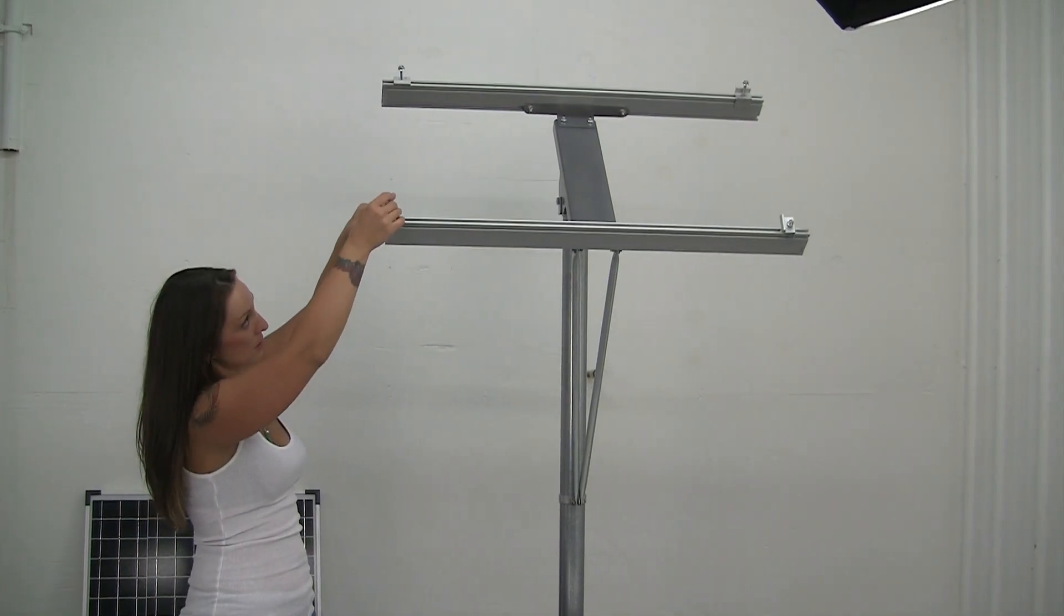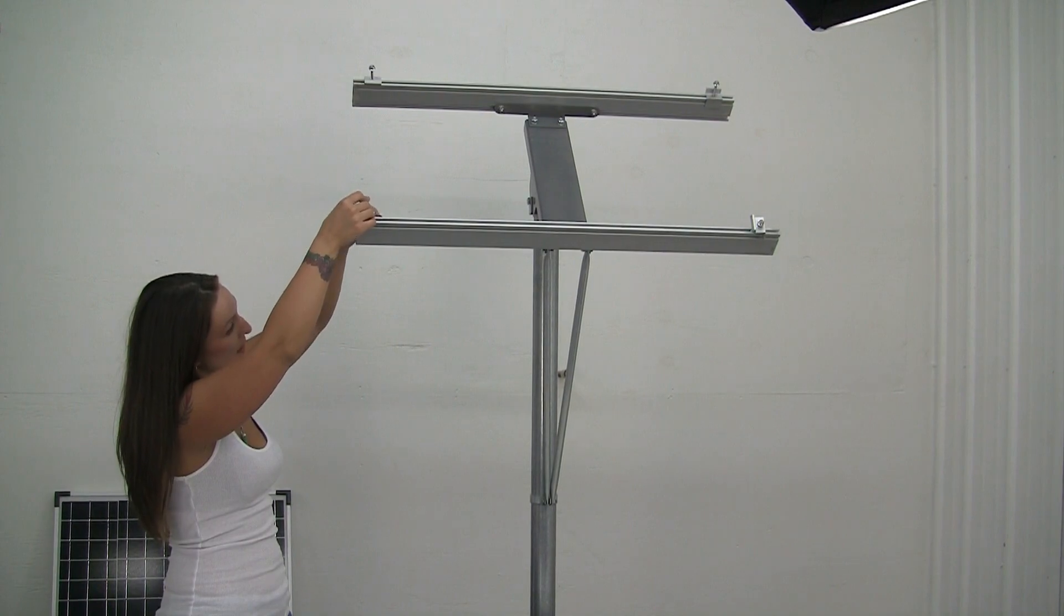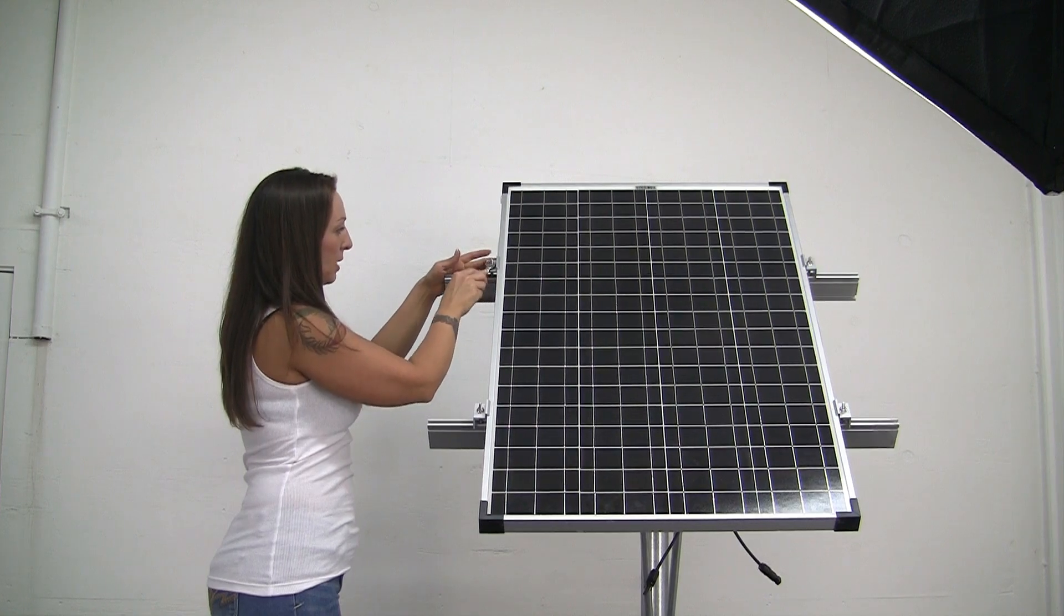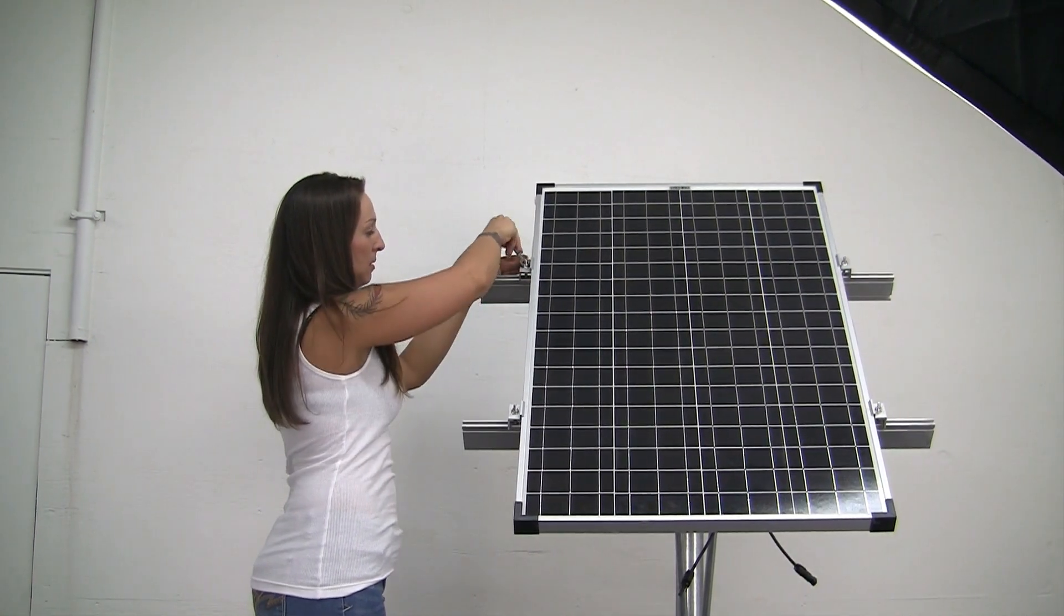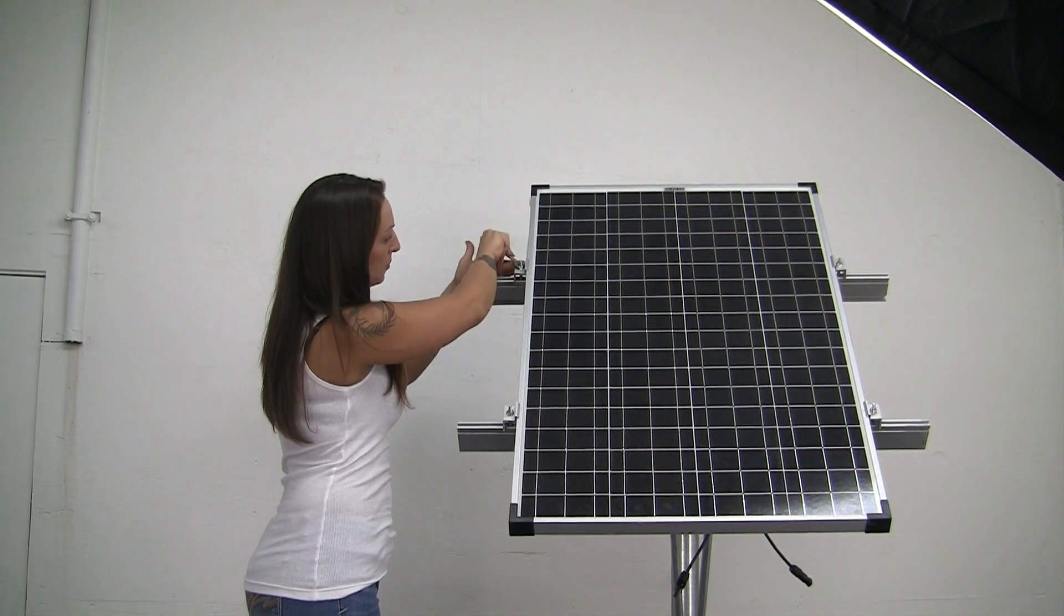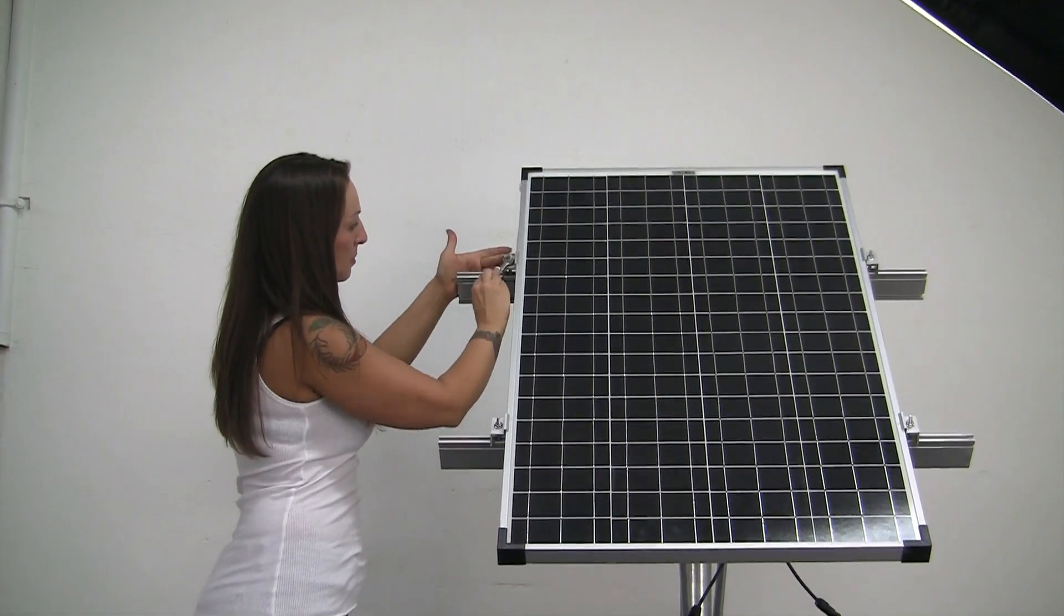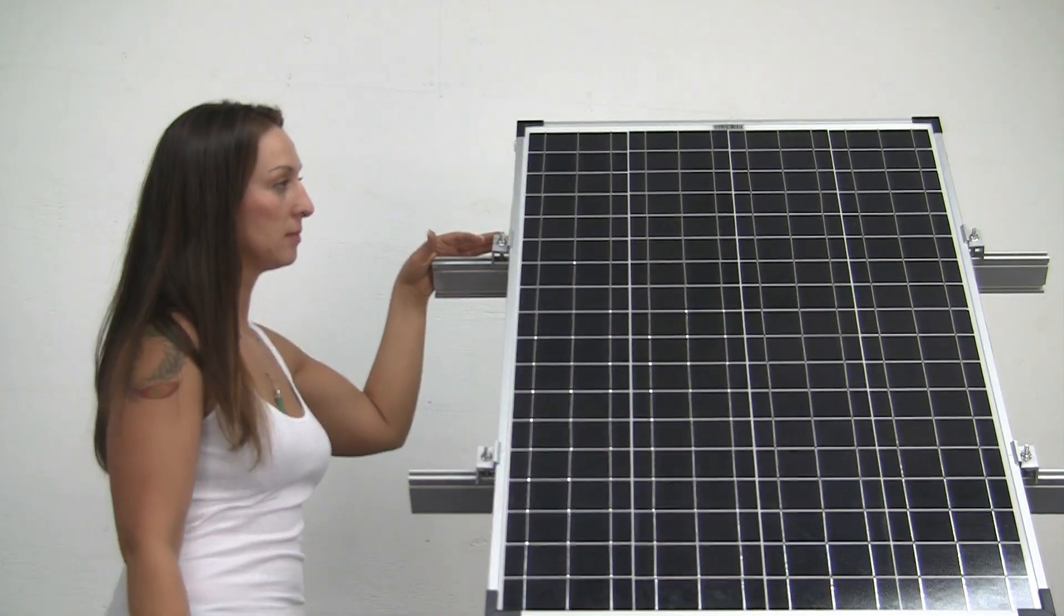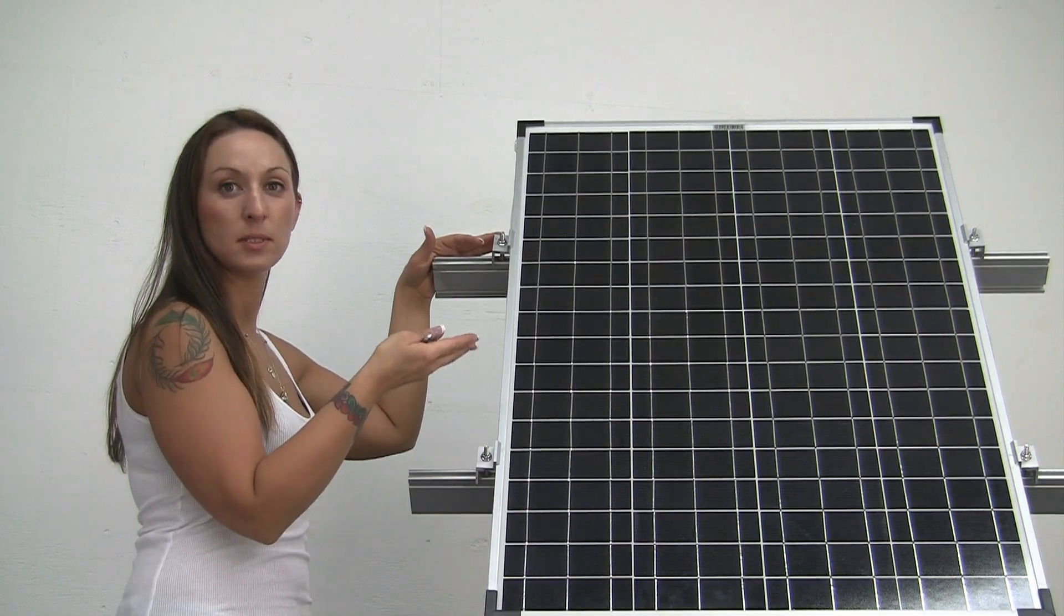These are the clamps that actually go on the ends toward the solar panel. I've got my solar panel up now, mounted up. Tighten those up and clamps. And voila. Top of the pole solar panel mount.